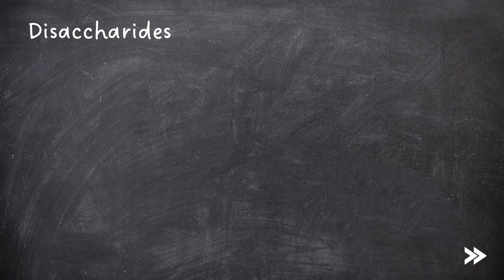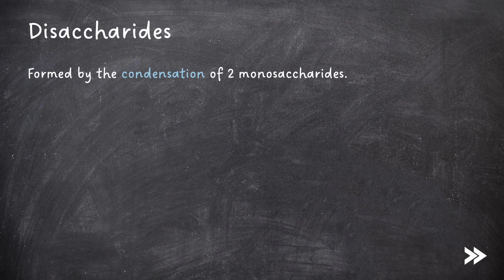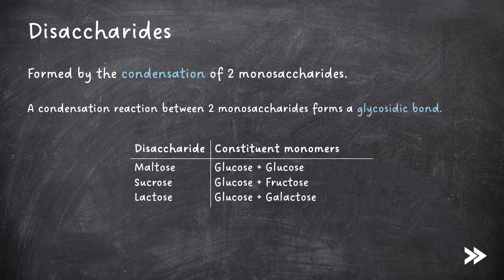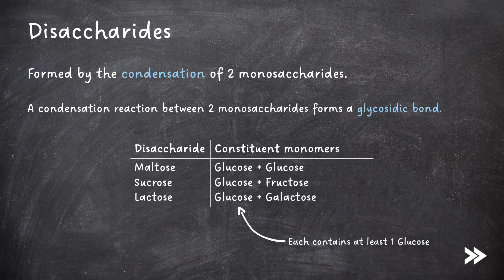Next we need to know about disaccharides. Disaccharides are formed by the condensation of two monosaccharides. A condensation reaction between two monosaccharides forms a glycosidic bond. So we need to know different disaccharides and their constituent monosaccharides. Maltose is a disaccharide formed by the condensation of two glucose monomers. Sucrose is formed by the condensation of a glucose and a fructose monomer. And lactose is formed by the condensation of a glucose and a galactose monomer. Note that each of these disaccharides contains at least one glucose monomer.